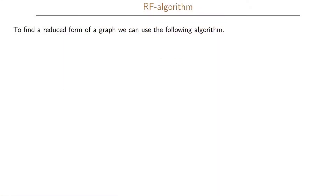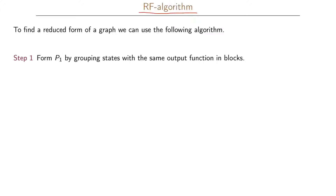We will now give an algorithm that allows us to find the reduced form of a graph. The algorithm is called the RF algorithm, where RF is short for reduced form. To find the reduced form of a graph we use the following steps. In step 1, we form a set called P1 by grouping the states with the same output function in blocks.